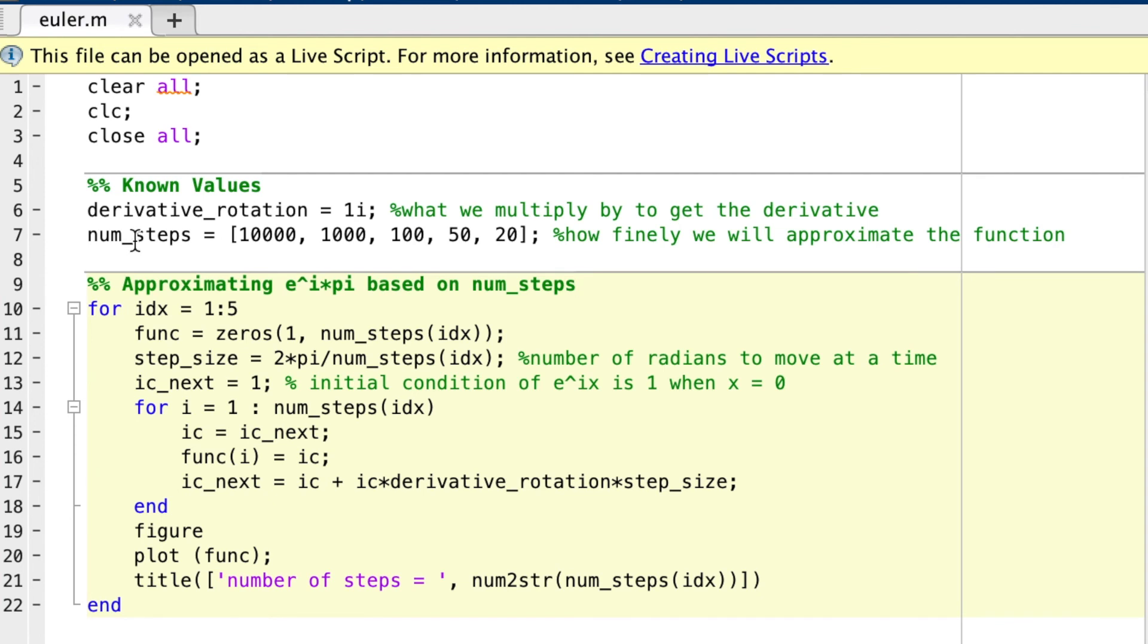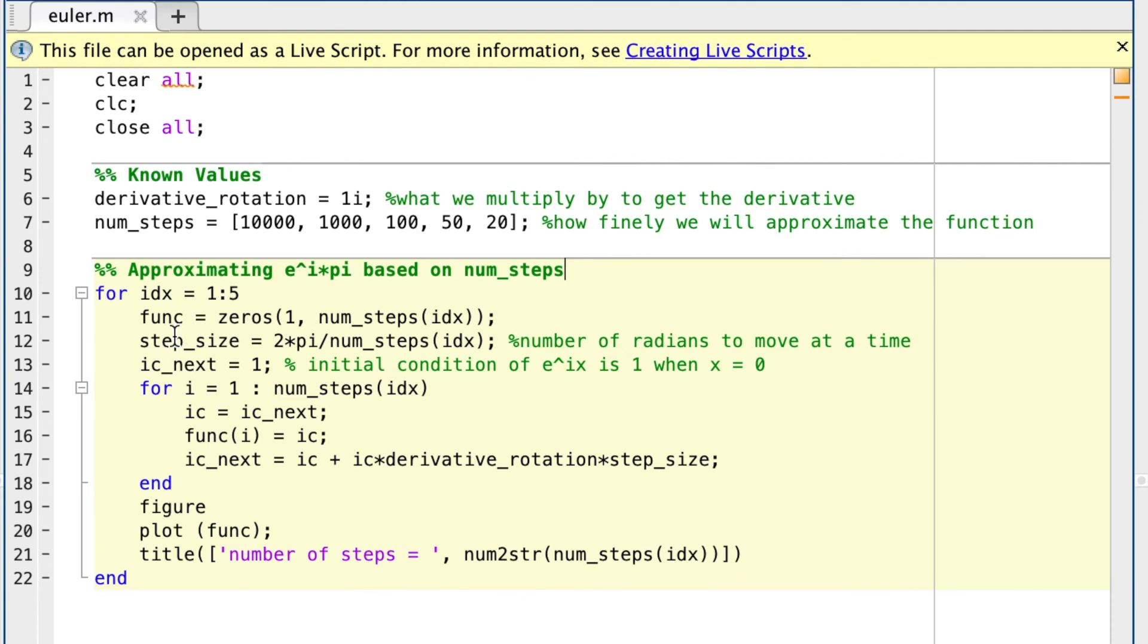I also have a variable for the amount of precision I'm going to use to approximate the function. I'm going to use a step size that uses the number of steps, and I'm going to divide 2π by the number of steps to be my size of each individual step, because there are 2π radians to a unit circle.